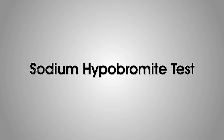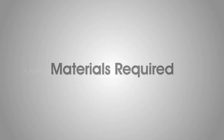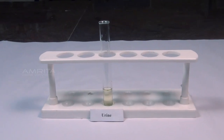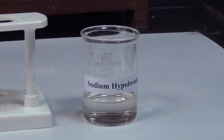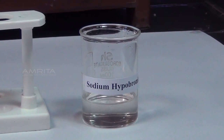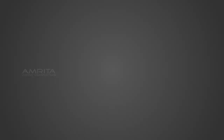Sodium Hypobromite Test — Materials Required: urine sample in a test tube, sodium hypobromite solution, and a dropper.